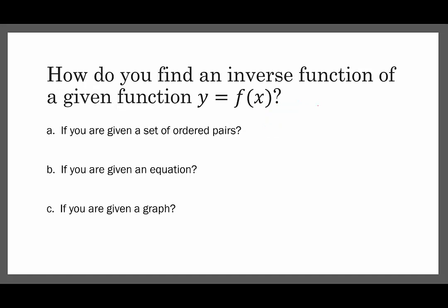How do you find an inverse function if you're given the function y equals f of x? So just in various forms, if you're given a set of ordered pairs, so if you're given x1, y1, and x2, y2, and x3, y3, and whatever, dot dot dot. So if we're given a set of ordered pairs, what we would do to find the inverse is we would switch each ordered pair. So f inverse of x, because then I get in the habit of using the correct notation, would be y1, x1, y2, x2, y3, x3, and so on.